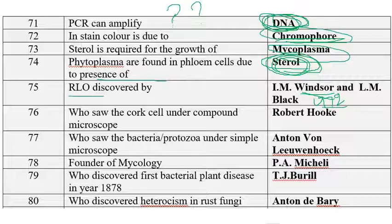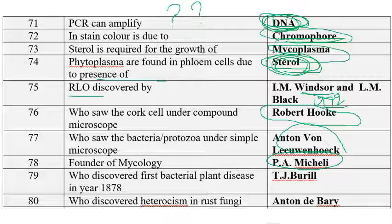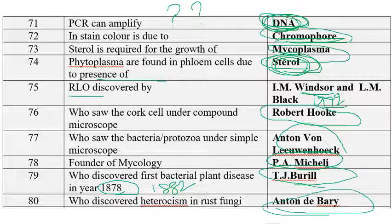Who saw the cork cells under compound microscope? That is Robert Hooke in 1665. Who saw bacteria and protozoa under simple microscope? Antonie van Leeuwenhoek — he was the first to discover bacteria. Founder and father of mycology is P.A. Micheli. Who discovered the first plant bacterial disease? It is T.J. Burrill — not 1878 but 1882. Who discovered heteroecism in rust fungi? That is Anton de Bary, who also introduced terms like teleospores, symbiosis, and the heteroecious nature of rust.